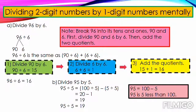In this slide, we'll be learning how to divide two-digit numbers by one-digit numbers mentally. We have two examples to discuss this lesson. First, let us find the quotient of 96 and 6. The first thing we'll do is break 96 into its tens and ones: 90 and 6. Then divide 90 and 6 by 6, and add the two initial quotients to get the final quotient.